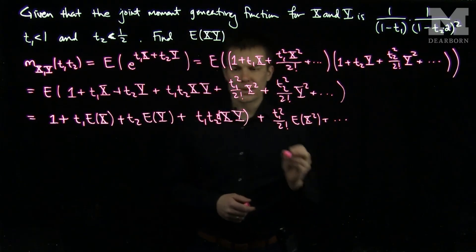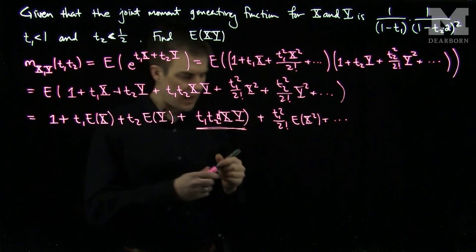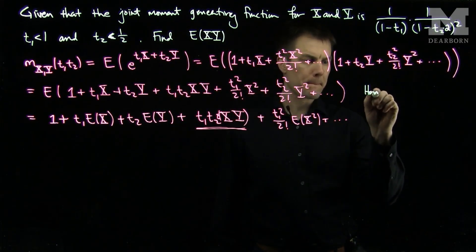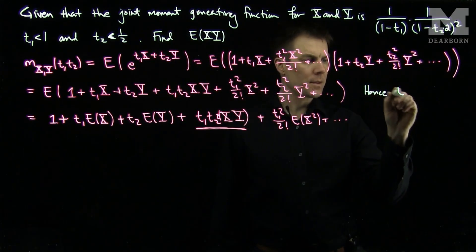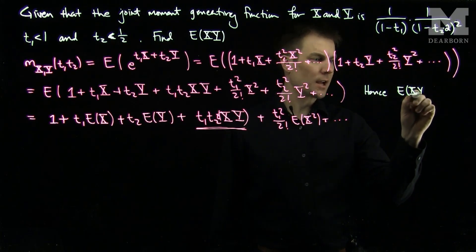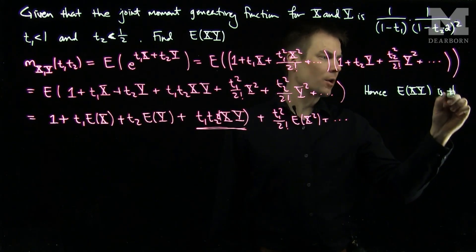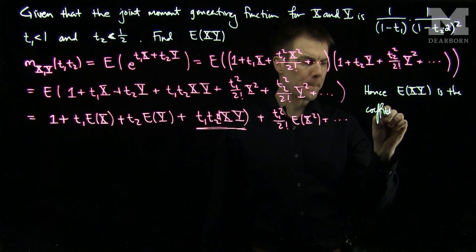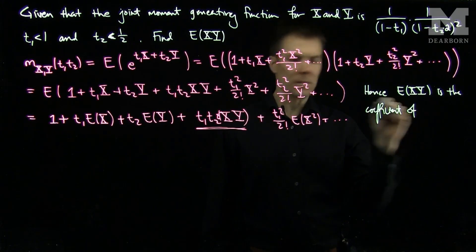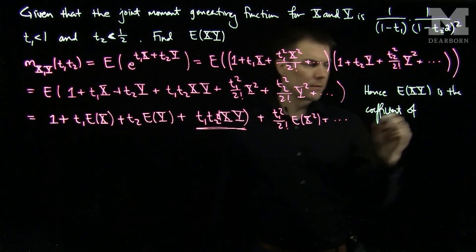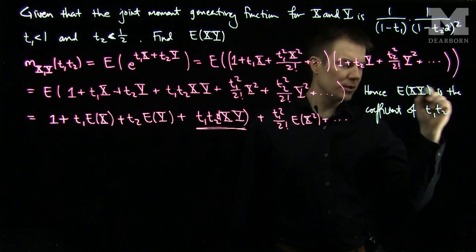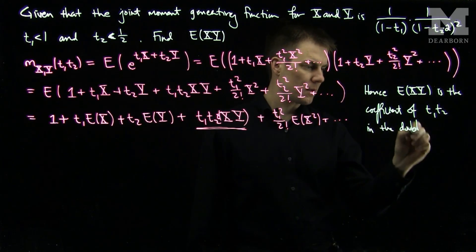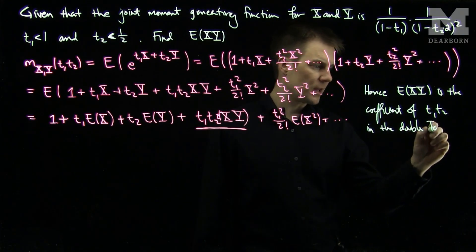We see that if we highlight this term, the expected value of x times y is the coefficient of t1*t2 in this series expansion — the double Taylor expansion.